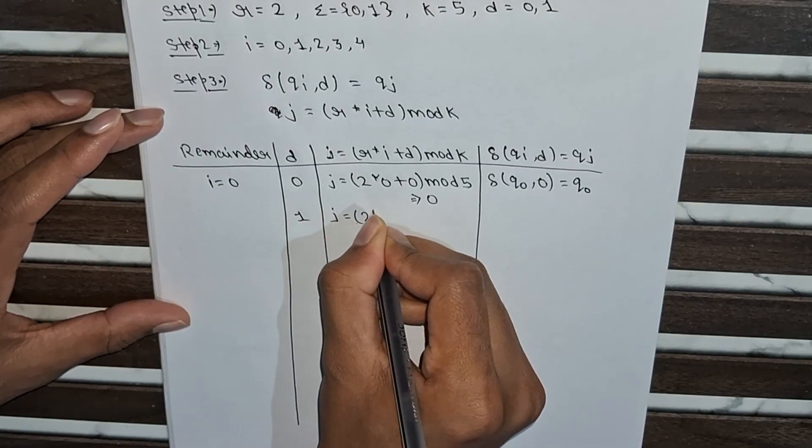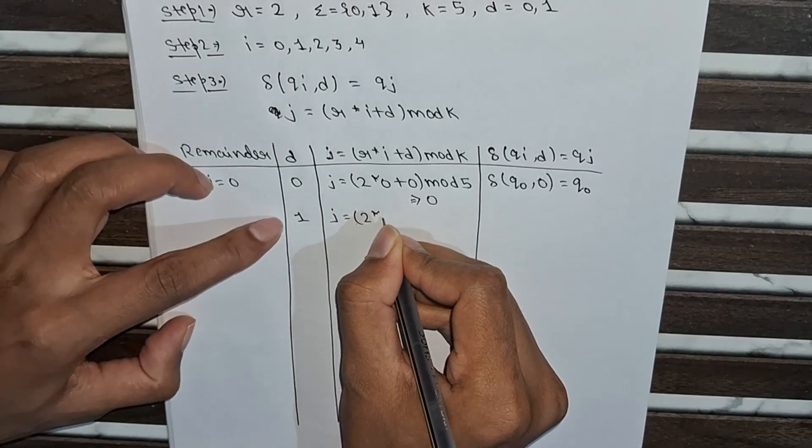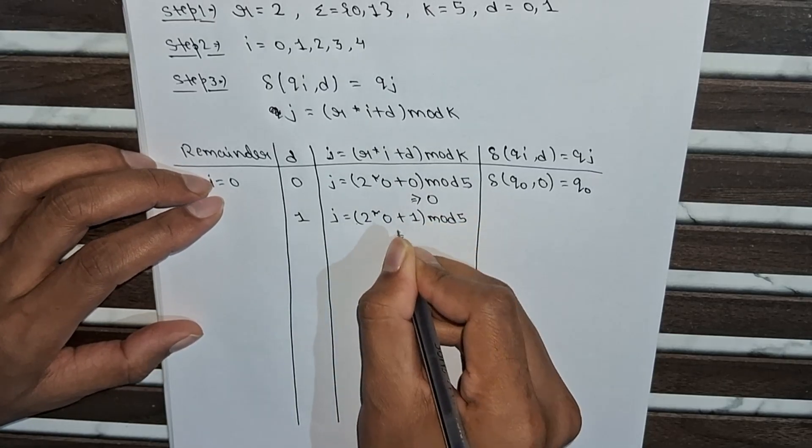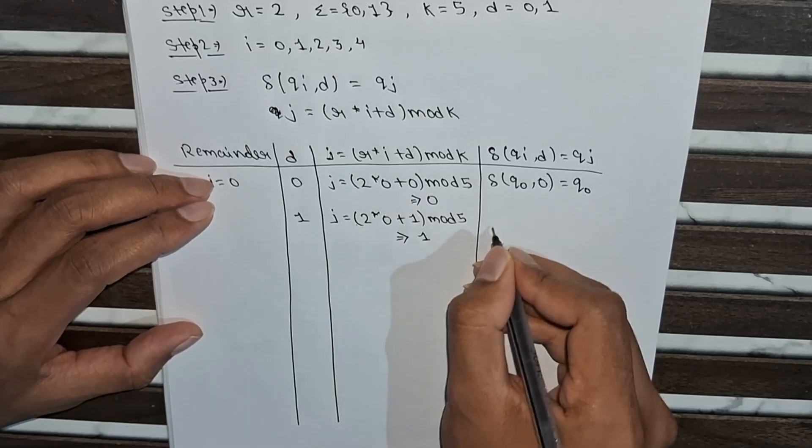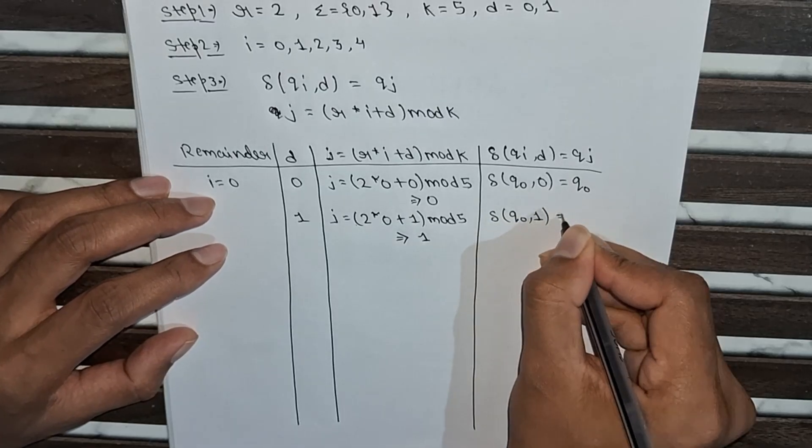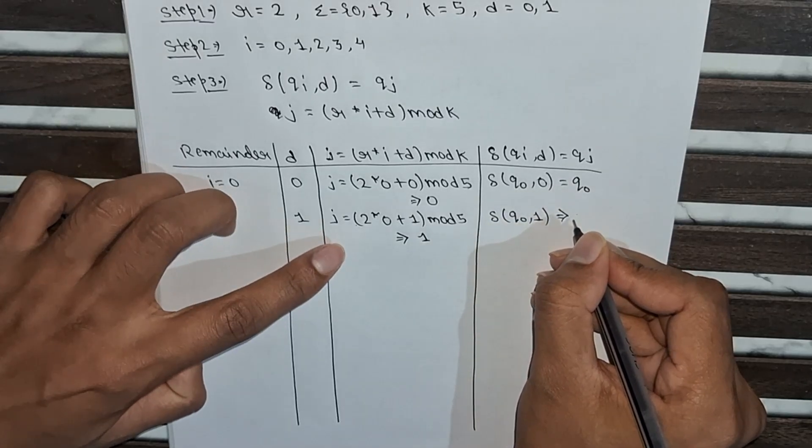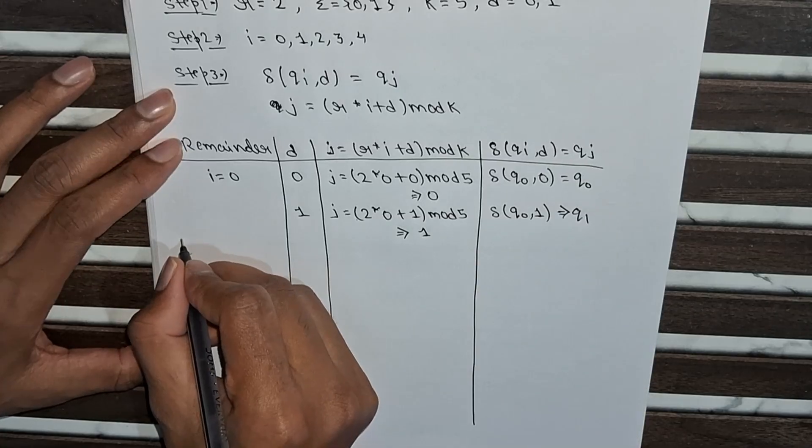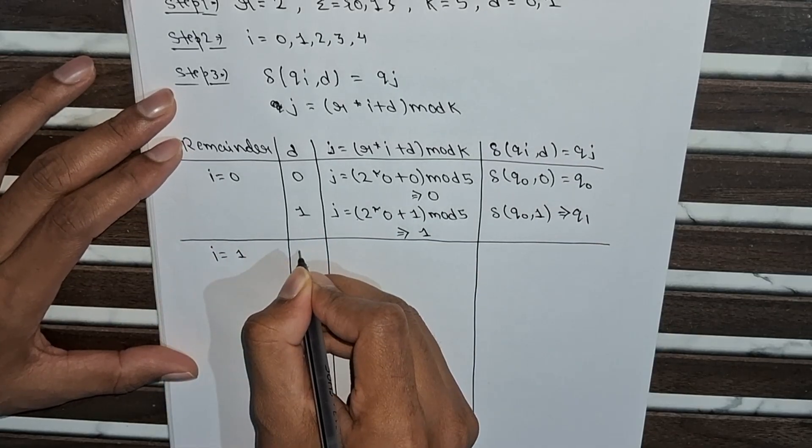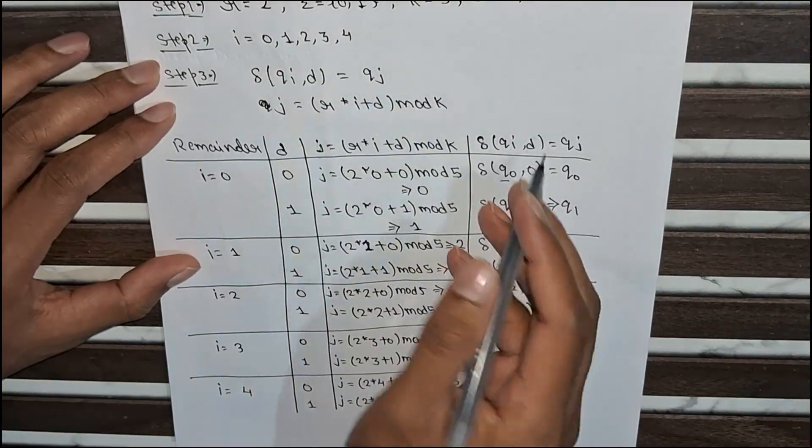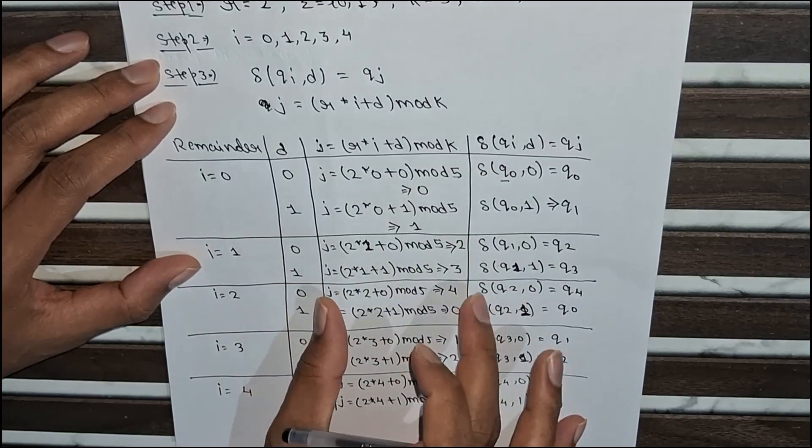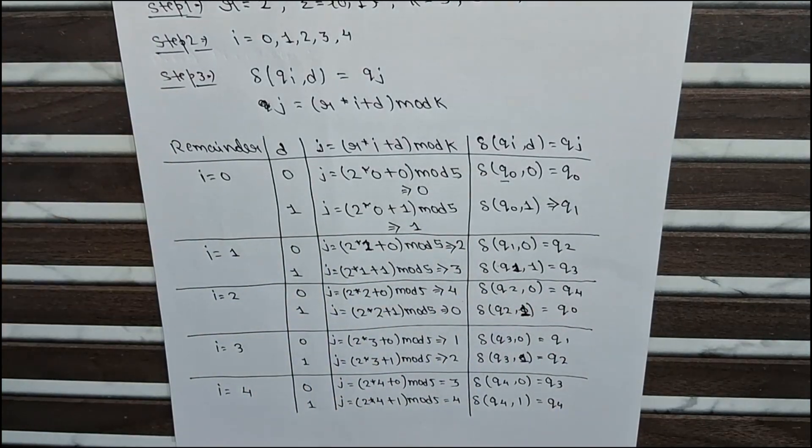Now j = 2 × 0 + 1 mod 5, which gives us 1. The transition for this is δ(q0, 1) = q1. Like this we have to do for the rest of the cases, for all the remainders. By putting all the values in these formulas, we get this table. With the help of this table, we are going to draw a DFA diagram.